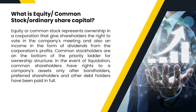To summarize: equity or common stock represents ownership in the corporation, giving shareholders the right to vote in company meetings and to receive income in the form of dividends from the corporation's profit. Common stockholders are at the bottom of the priority ladder, and in the event of liquidation, they have a right to company assets only after bondholders, preferred shareholders, and other debt holders have been paid in full.